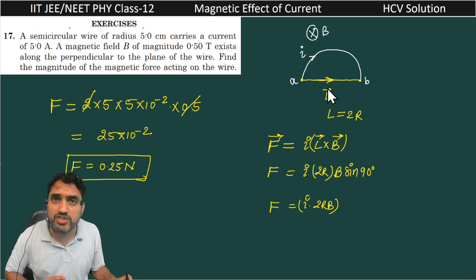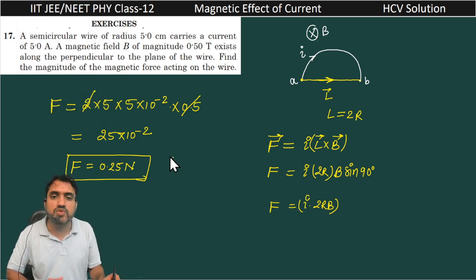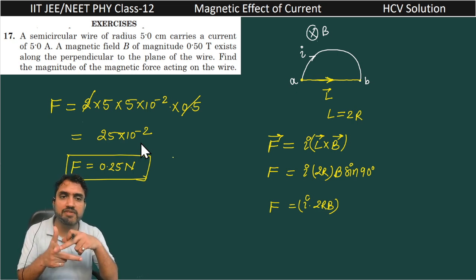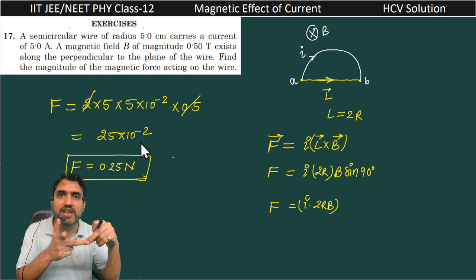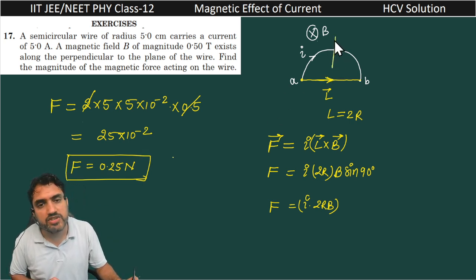What is the direction of force? If you want to find out the direction of force, you can use Fleming's left hand rule. This is the direction of magnetic field, this is the direction of L vector, and this is the direction of force. So force will be in the vertical upward direction.